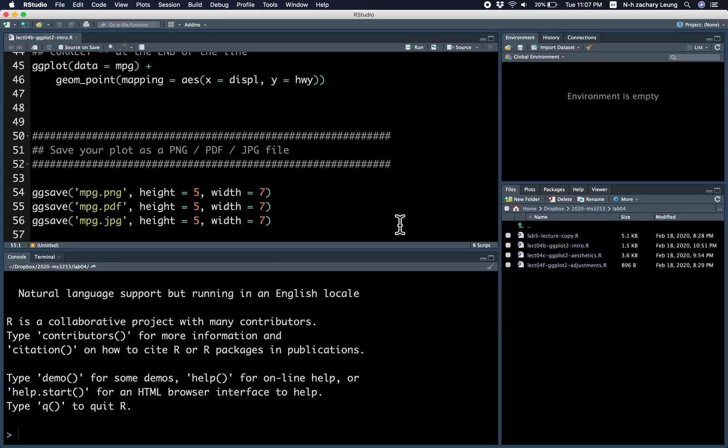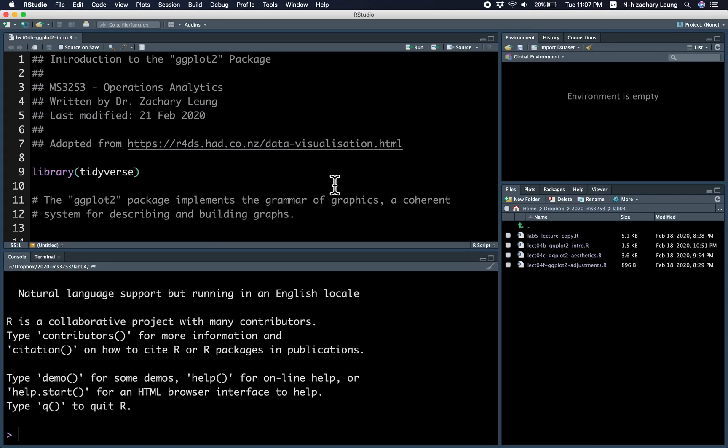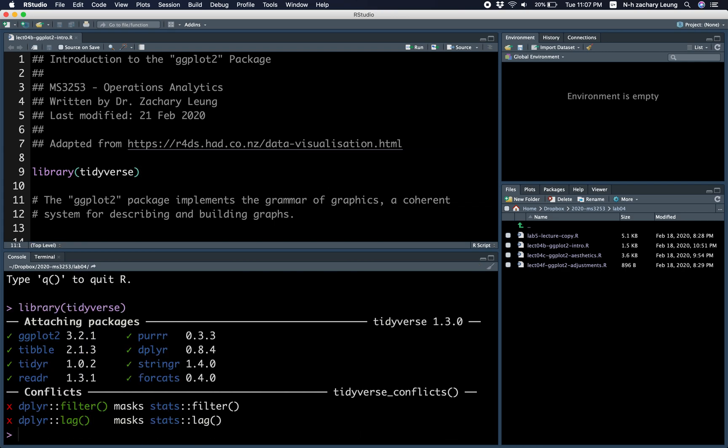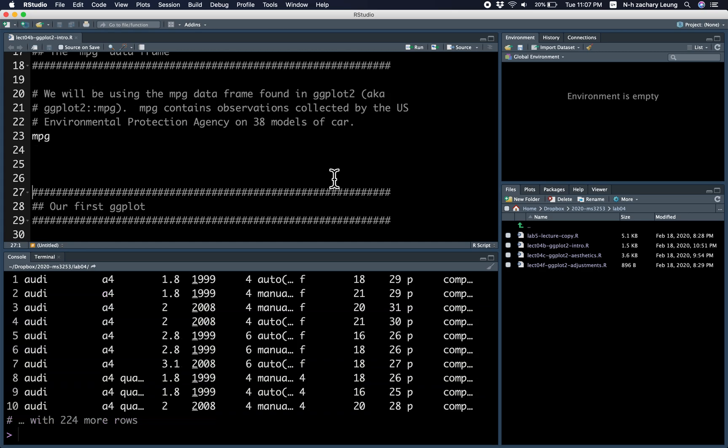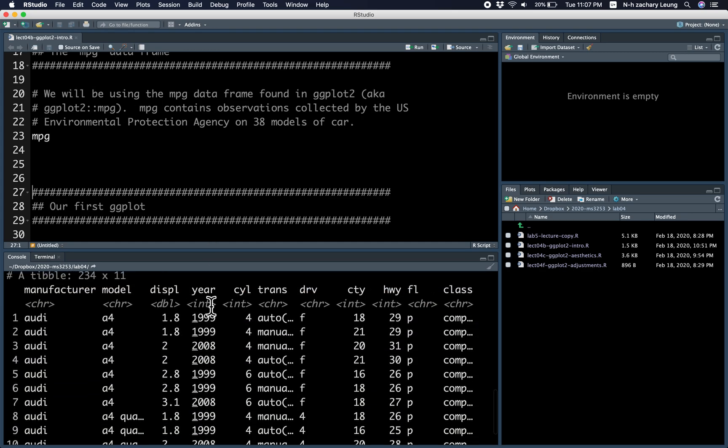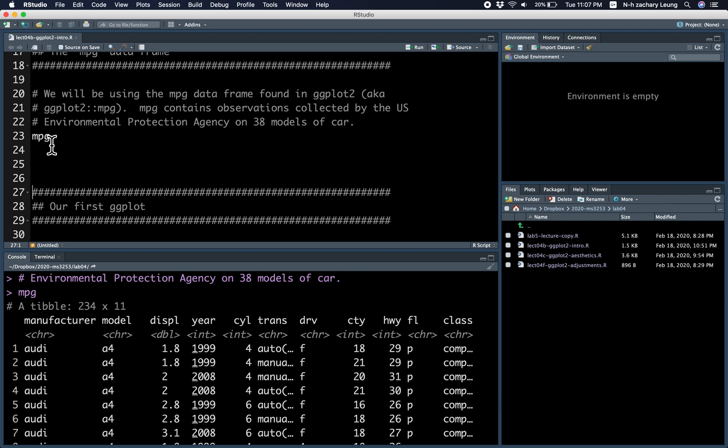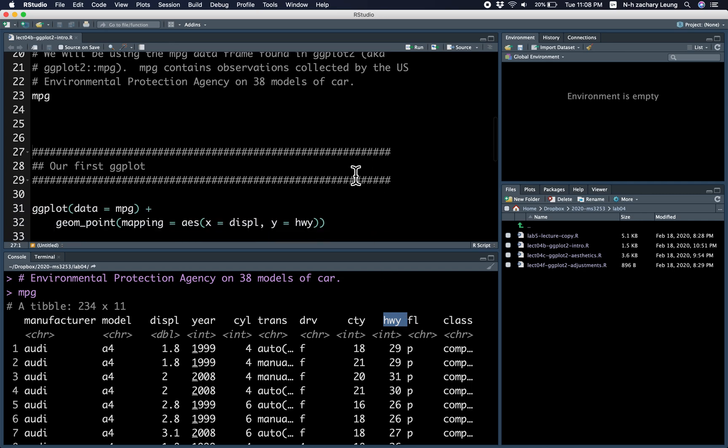All right, let's take a look at how the code works. This is going to be a pretty short coding demo. So as usual, you need to load the tidyverse. And then let's take a quick look at the MPG data frame. Remember the displacements and the highway miles per gallon columns that we'll be plotting.